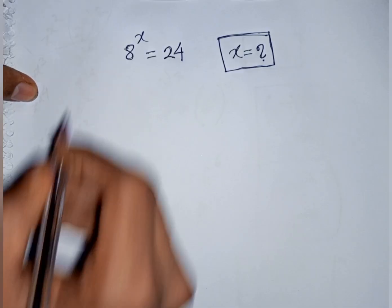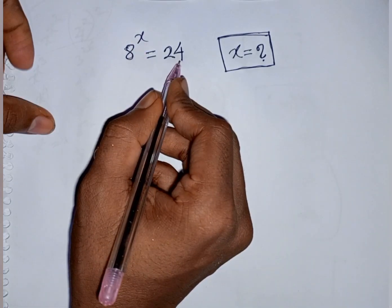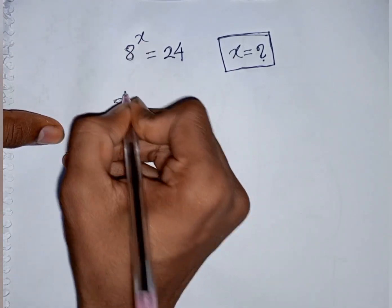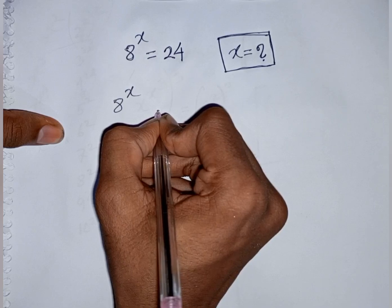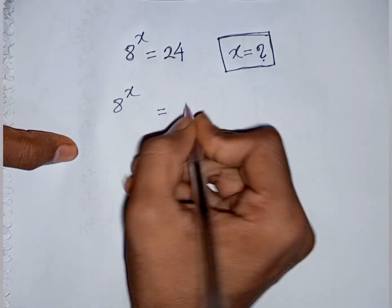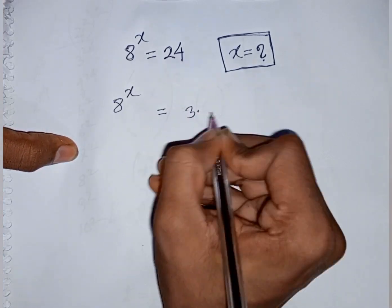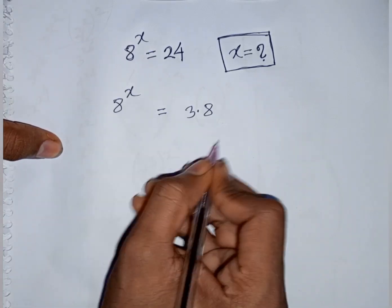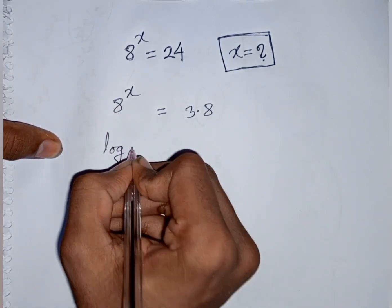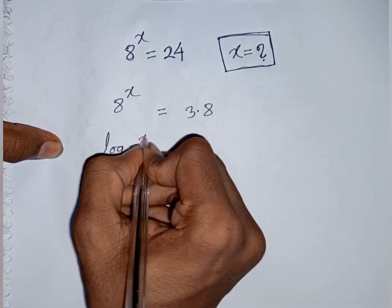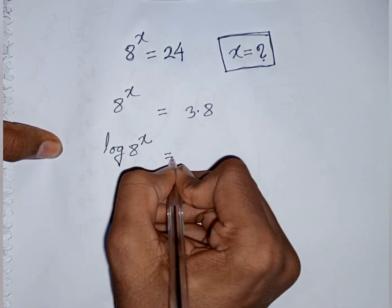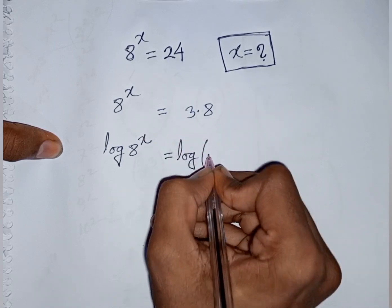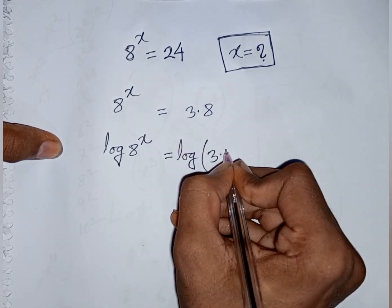How to solve 8 power x equals 24. Find the value of x. We can write 24 as 3 times 8, then apply log to both sides: log of 8 power x equals log of 3 times 8.